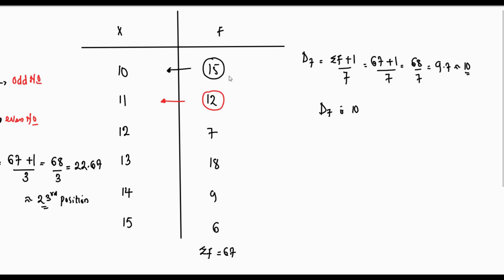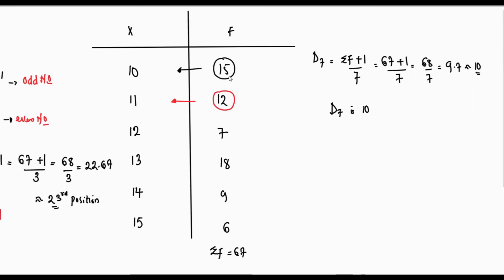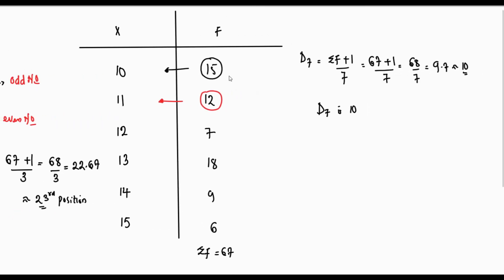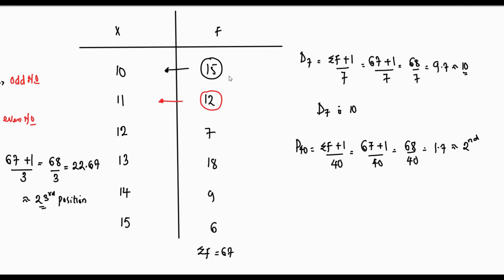The last question asks us to find the 40th percentile. P40 equals (summation f + 1) divided by 40. That's (67 + 1) divided by 40, which equals 68 divided by 40. Doing the math: 68 divided by 40 gives us 1.7, which is approximately 2. This means our 40th percentile is located in the second position. The second position data falls within the frequency count of 15, so our 40th percentile P40 equals 10.